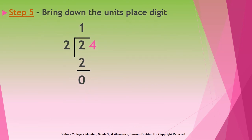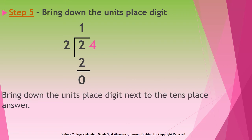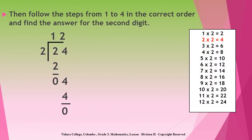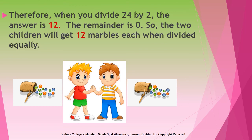Step five is bringing down the units place digit. So children, you should bring down the units place digit, which is four, next to the tens place answer, like this. Now children, you should follow steps one to four in the correct order to find the answer for the second digit. We did those steps in the previous examples. Therefore, when you divide 24 by 2 using the long division, the answer is 12 with no remainder. So, those two children will get 12 marbles each when divided equally.